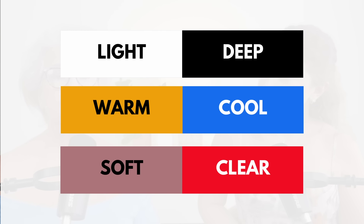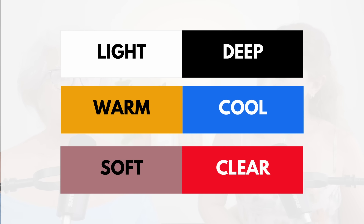Let's go ahead and get into a quick review of the six dominant characteristics for anyone who is new or just needs a quick refresher. As we're looking to determine which of the six dominant characteristics is someone's dominant characteristic, we have to determine all of their characteristics. Are they light or are they deep? Pick one. Are they warm or are they cool? Pick one. Are they soft or are they clear? Pick one. You'll end up with three characteristics that represent this person, and then you have to decide which one is dominant.